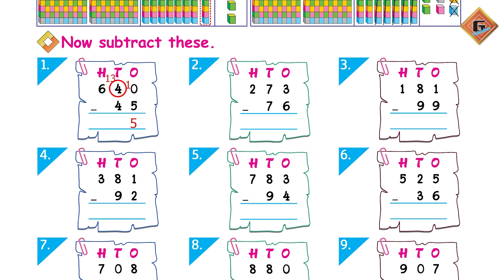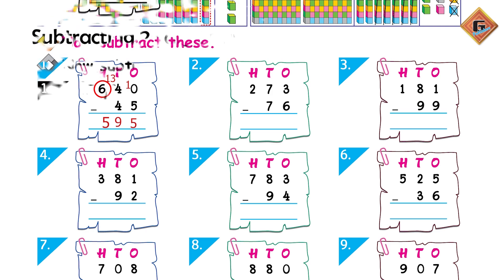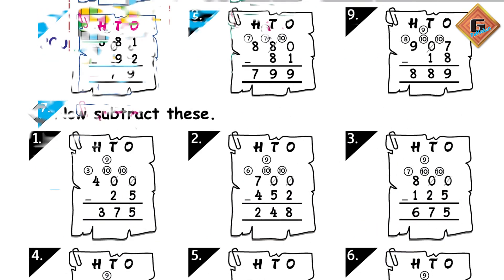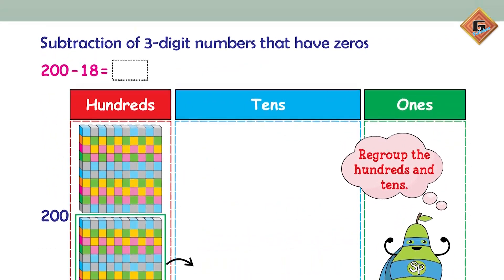Now you can't do 3 minus 4, so what are you going to do? Yes, excellent! You are going to carry 100 from the hundreds column. It is going to be 13. 13 minus 4 is 9, and in the hundreds column, 5 remains. Your answer is going to be 595. Excellent! Now do the rest and check your answers from the screen.